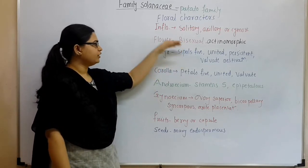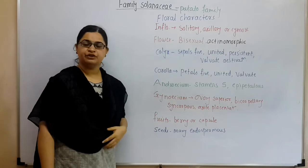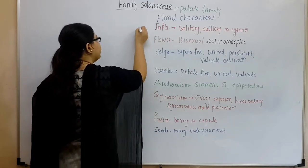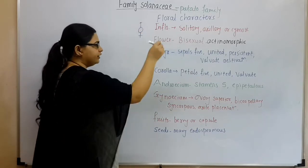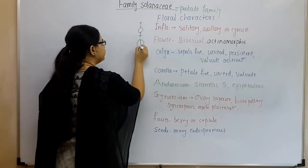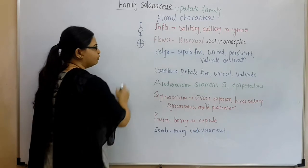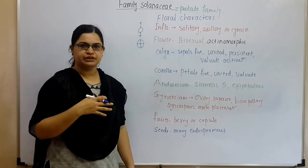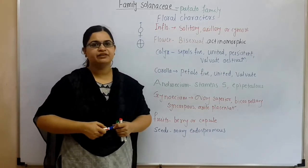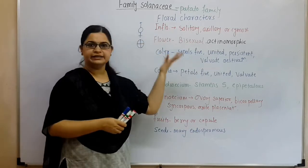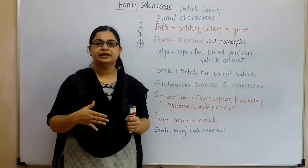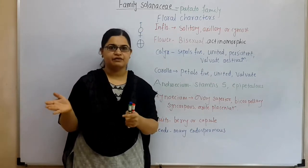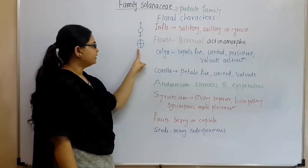Flower: bisexual. We have already seen the symbol for bisexual. Then actinomorphic — when you take any flower from the Solanaceae family members, you can cut it in more than two planes to get equal parts of it. That is the actinomorphic condition, and this is the actinomorphic symbol.